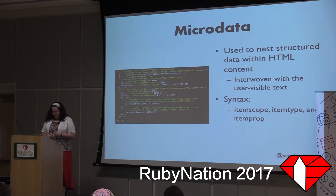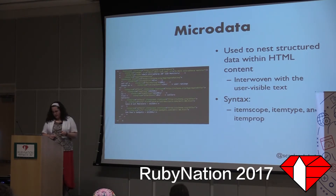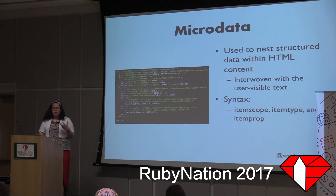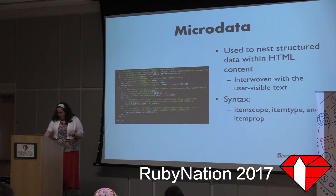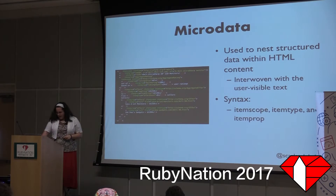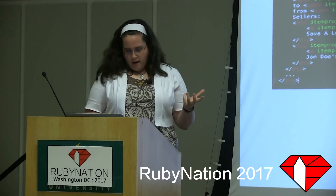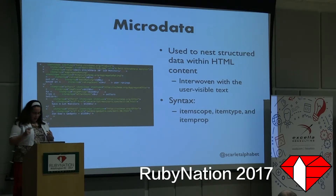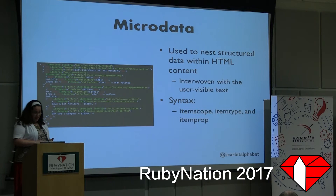Microdata is an open community HTML specification used to nest structured data within an HTML context. It's got some basic syntax you'll see no matter what context you're using to define your items, like item scope. Item scope is used to define an item and is basically telling the search engine, 'Okay, an item is coming up, and I'm about to tell you what to expect from it.' Item type reveals the specific type of the item as well as what context you're using — in this case, the first item is going to be a product as defined by schema.org.